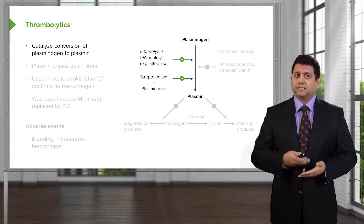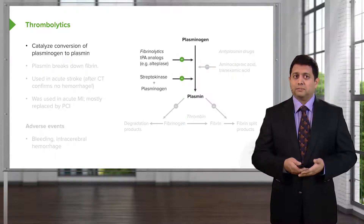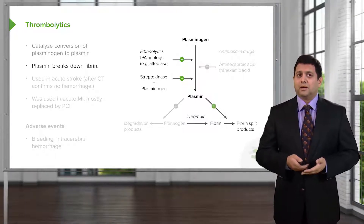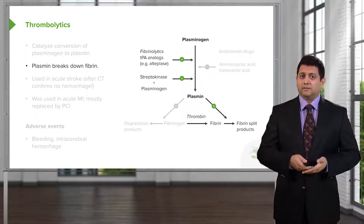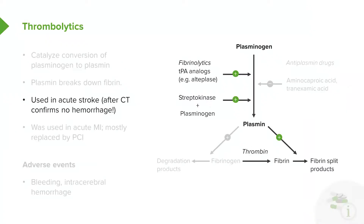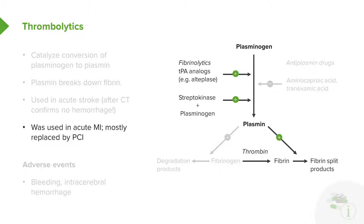They catalyze conversion of plasminogen to plasmin, and plasminogen to plasmin causes breakdown of fibrin, so the fibrin blood clot is actually broken down. It's used often in acute stroke after you've confirmed that there's no hemorrhage on the CT scan. We also use it in acute MI, but that's more replaced by catheterization.